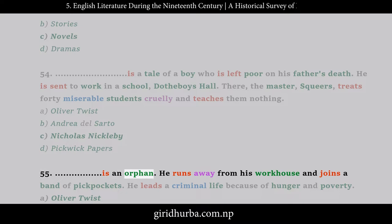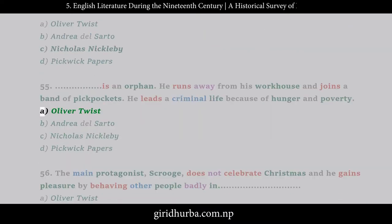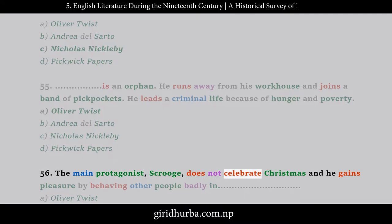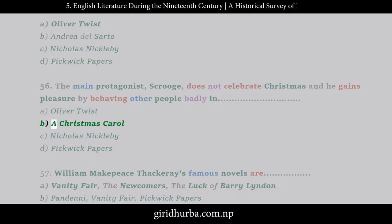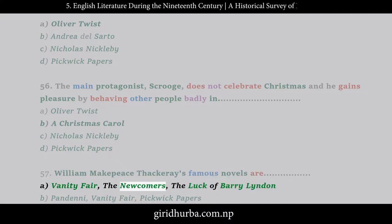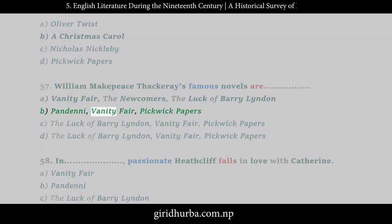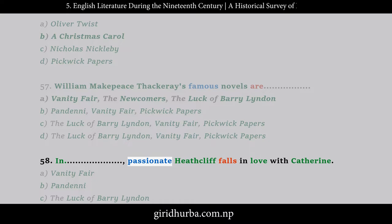Question 55: __ is an orphan who runs away from his workhouse and joins a band of pickpockets; he leads a criminal life because of hunger and poverty. A. Oliver Twist, B. Andrea del Sarto, C. Nicholas Nickleby, D. Pickwick Papers. Question 56: The main protagonist Scrooge does not celebrate Christmas and he gains pleasure by behaving badly towards other people. A. Oliver Twist, B. A Christmas Carol, C. Nicholas Nickleby, D. Pickwick Papers. Question 57: William Makepeace Thackeray's famous novels are: A. Vanity Fair, The Newcomers, The Luck of Barry Lyndon, B. Pendennis, Vanity Fair, Pickwick Papers, C. The Luck of Barry Lyndon, Vanity Fair, Pickwick Papers, D. The Luck of Barry Lyndon, Vanity Fair, Pickwick Papers.